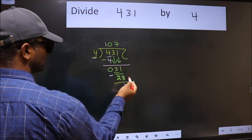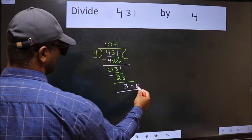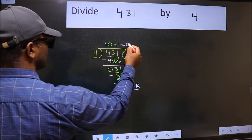No more numbers to bring it down. So, we stop here. This is our remainder and this is our quotient.